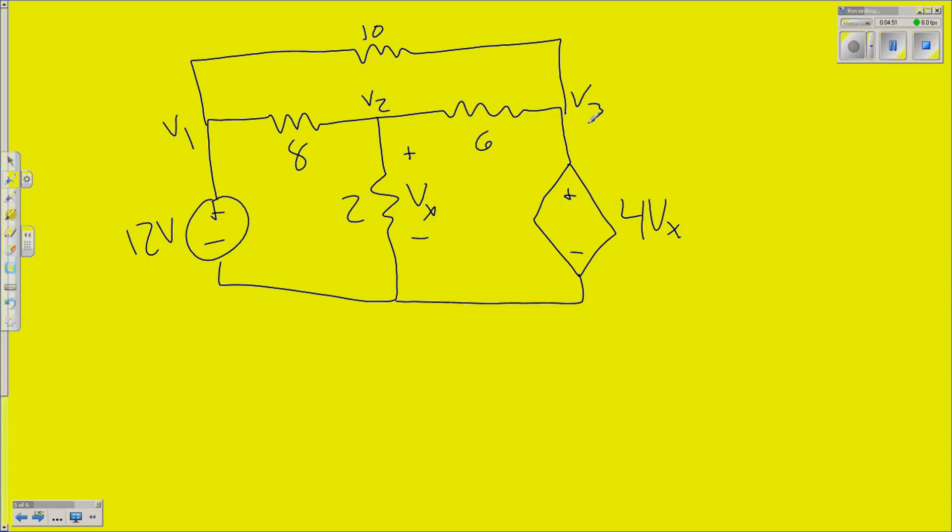Same nodes. In this case, however, is it going to be easier? Yeah, probably. So, N1 is equal to 12 volts. Hopefully, we've all got that one by now. V2 again. V2 minus V1 over 8 plus V2 over 2 for Vx. And V2 minus V3 over 6 equals 0.